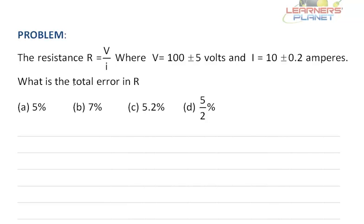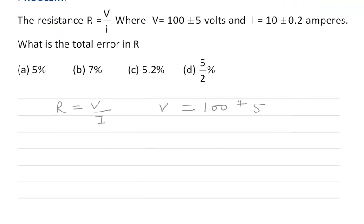The resistance R which is given by V by I, where V is given as 100 plus minus 5 volts, and current I is given as 10 plus minus 0.2 amperes.